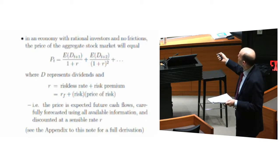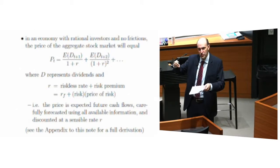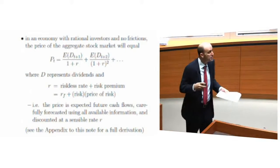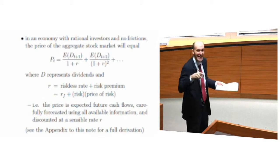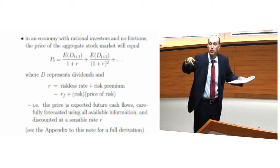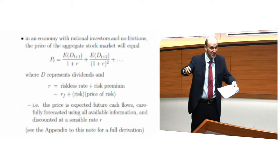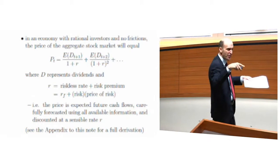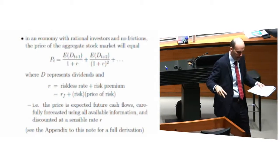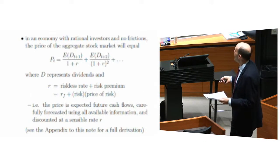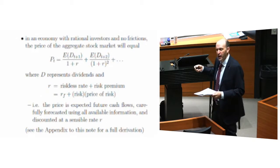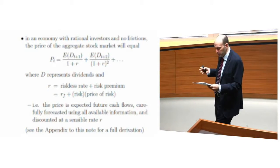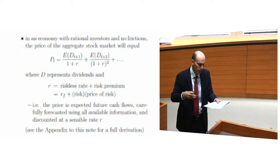First, there could be changes in the numerator — new information that tells us companies are going to be more profitable in the future, pushing the stock market up. Second channel, the risk-free rate: information that the risk-free rate is going to be higher will push the stock market down because the competing asset becomes more attractive. Third channel, risk: new information that the stock market is going to be riskier will push it down. And fourth channel, risk aversion: if people become more risk-averse, that will push the stock market down. So four reasons why the stock market might fluctuate in a fully rational economy.